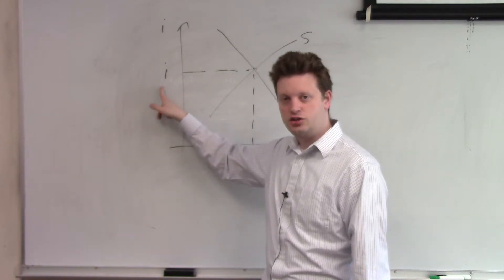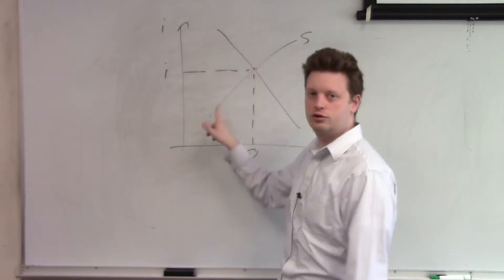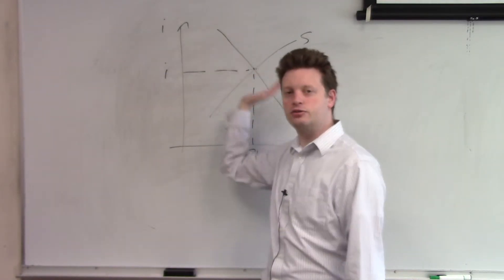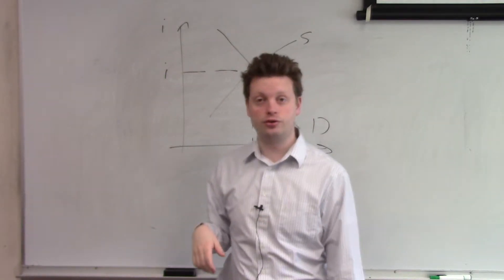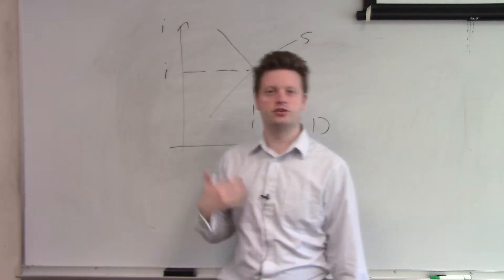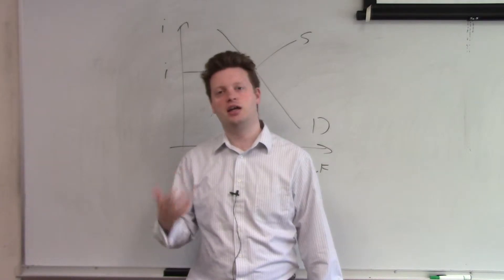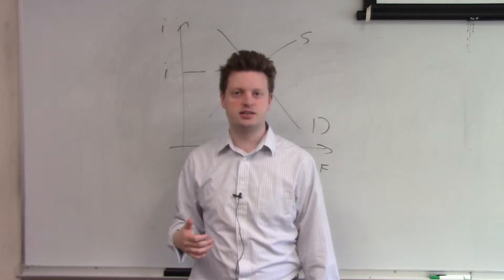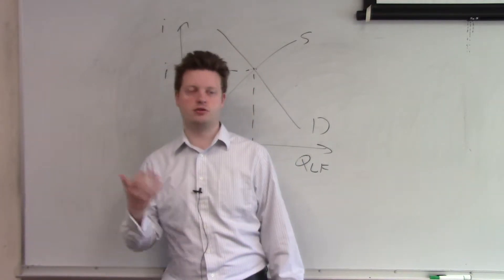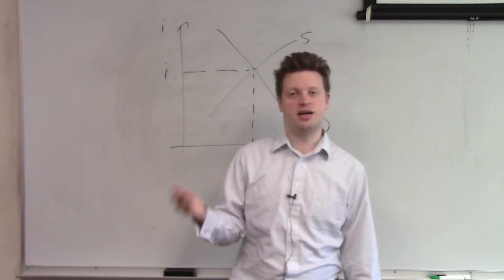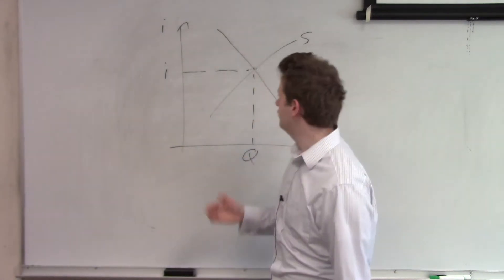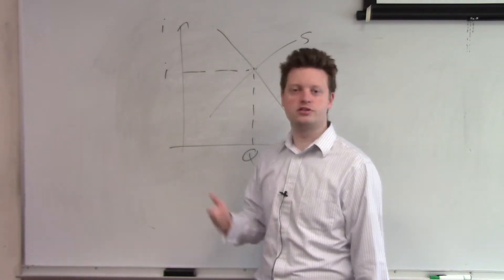Because if we change the interest rate, we move along the supply curve. But if we shift something that shifts the savings behavior of households, then we shift supply. One example of such a shift in the savings behavior of households is tax incentives. If the government suddenly decides that you exempt savings from taxation or you increase the taxes on any savings you might have, then that will have an immediate impact on how much you decide to save.